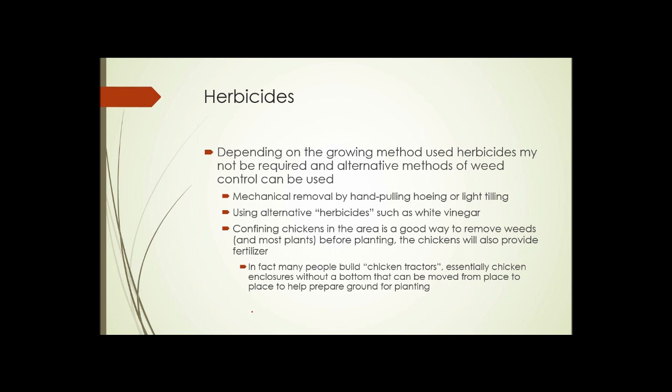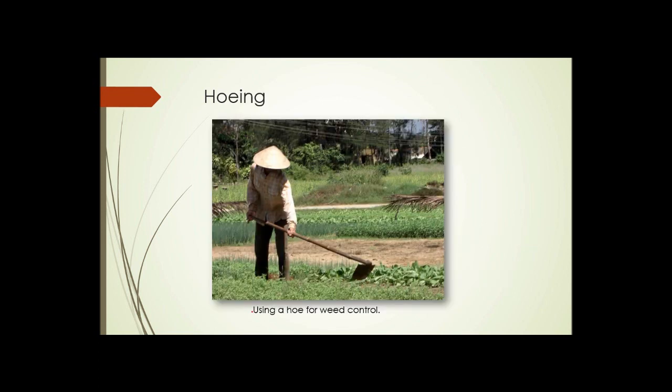Confining chickens in an area is a good way to remove weeds and, in fact, most plants before planting. The chickens also provide fertilizer. Chickens love to scratch in the soil. They'll eat small plants coming up and make a pretty effective way to prepare an area for planting. In fact, many people build what they call chicken tractors, which is essentially a chicken enclosure that doesn't have a bottom. And it can be moved from place to place, allowing the chickens to scratch in the soil and deposit their manure and essentially ready an area for planting. Hoeing is a traditional method of weed control. Simply cuts the weeds off at the soil level and prevents them from taking over.